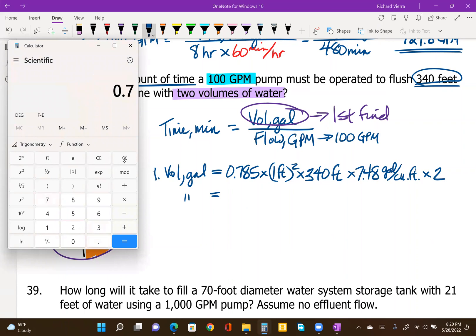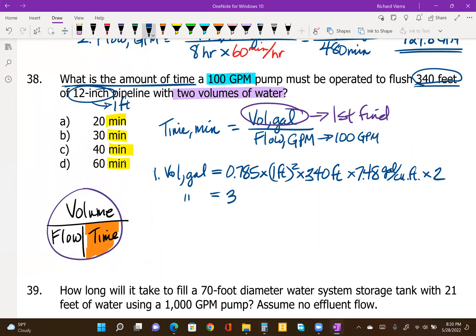So 0.785 times one foot squared, doesn't change anything, times 340 and times 7.48 to flush it through one time. It would take a little under 2,000 gallons. We're doing it twice. So I'm multiplying that times 2. So it looks like 3,993 gallons total to flush it through twice.